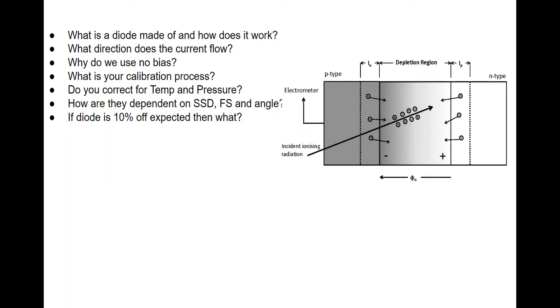Today let's talk about what is a diode made of and how does it work, what direction does the current flow, why do we use no bias, what is your calibration process, do you correct for temperature and pressure, how are they dependent on SSD, field size and angle, and if a diode is 10% off, what is expected.